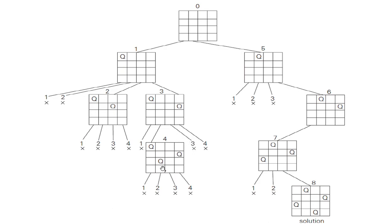Instead of placing the third queen in the second column, I will try the third column — that will also not lead to the solution — and the fourth column, also not a solution. That is, keeping the second queen in any column of the second row, given the first queen is in the first column of the first row, will not lead to a solution. So I have to backtrack again and follow a different path.